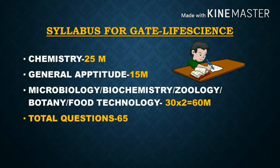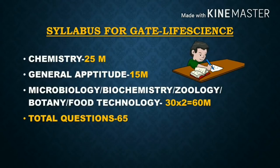Let's look at the subjects in GATE Life Science. First is Chemistry, which carries 25 marks. Second is General Aptitude for 15 marks. The third group has five subjects, from which you have to select any two of your interest. There will be a total of 65 questions and the total marks will be 100.